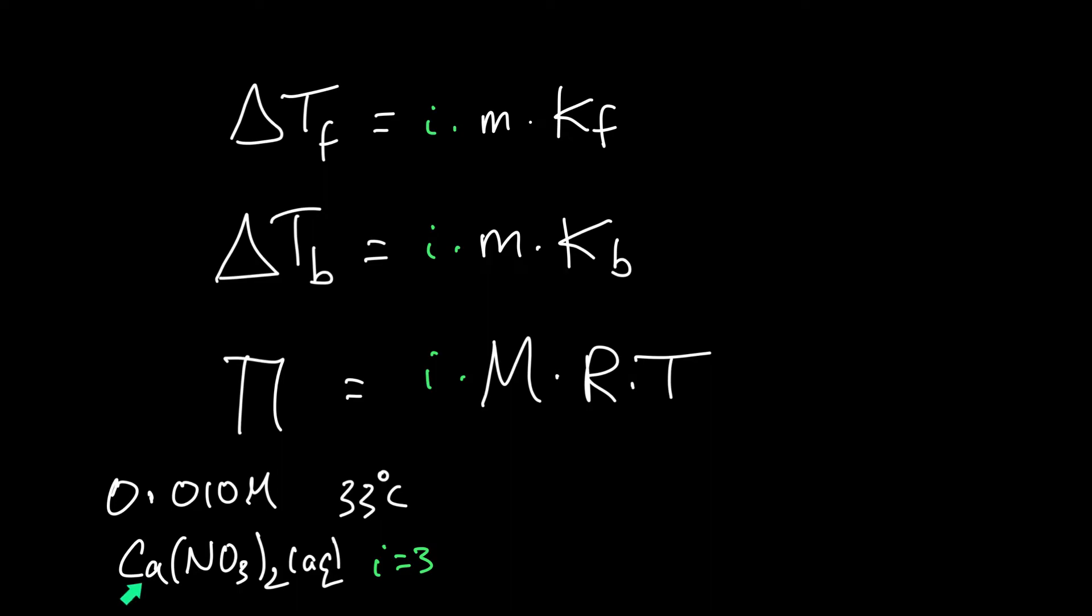And i is 3 for calcium nitrate. Why is it 3? Well, when it breaks down, it breaks down into a calcium ion. And not one nitrate ion, but two nitrate ions. So every one of these gives you three particles.